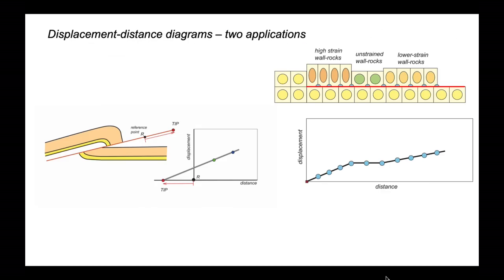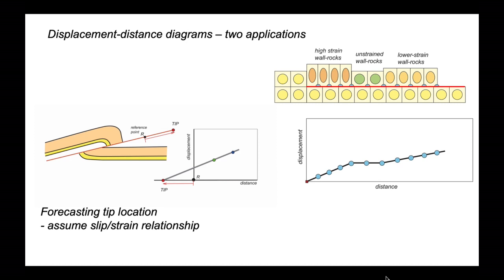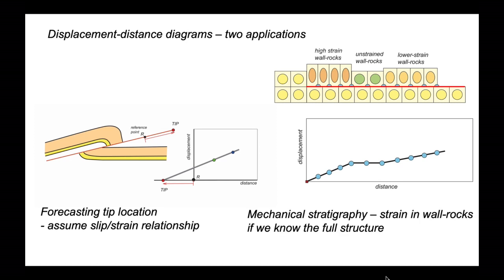So we've introduced the concept of displacement distance diagrams and looked at two applications. We looked at forecasting the location of the thrust tip — to do this, we had to quantify the relationships between displacement and distance for known parts of the diagram and then assume this relationship remained valid for the unknown part into which we extrapolated. In the second approach, we investigated mechanical stratigraphy: variations in how strain is accommodated in the wall rocks. We can do this if we know the full structure — where the fault is and where the markers are in both the hanging wall and footwall.